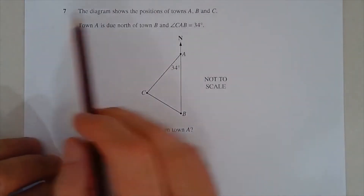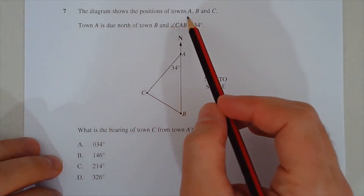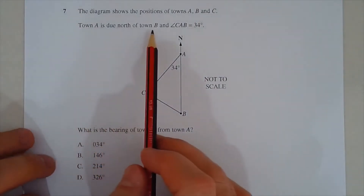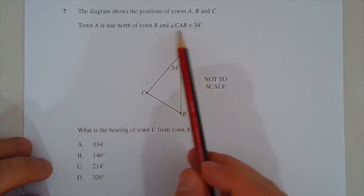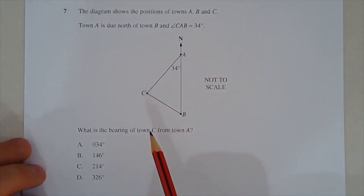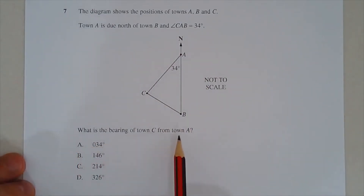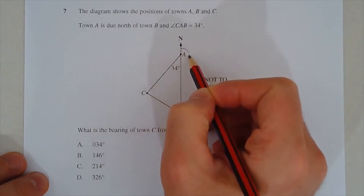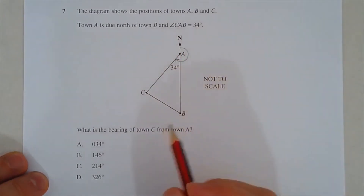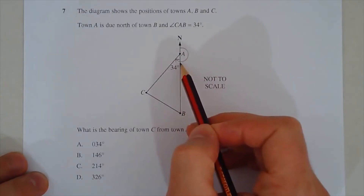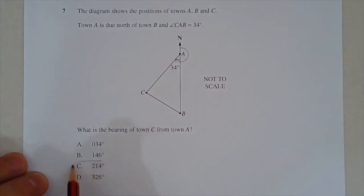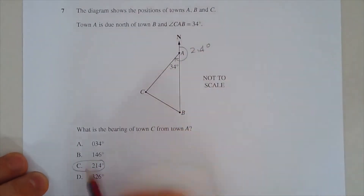Question 7: town A is due north of town B, and angle CAB = 34 degrees. The bearing of town C from town A is measured from north clockwise: 180 + 34 = 214 degrees. Option C.